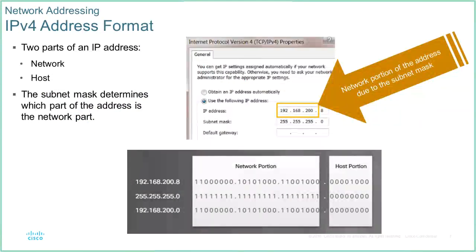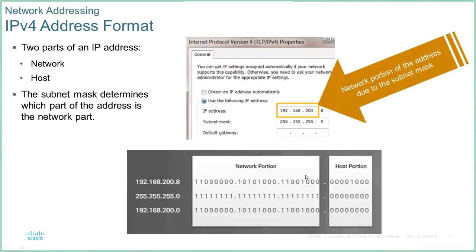How does a network address determine where to send traffic? We send traffic via routing — routers using the network portion of the address space. We have a network portion and a host portion. The network portion represents the cable that hosts hang off. Ethernet originally started with a router and a very long piece of coax cable, where you would put a T-connector into that coax cable and hang a computer off it every time you wanted to connect another host.